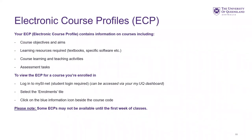So ECPs — what exactly are they? Your electronic course profile contains all the information for your course: the course objectives and aims, learning resources you need such as textbooks and specific software, learning and teaching activities, and your assessment tasks. To view your ECP for courses you've enrolled in, log into MySignet, which can be accessed via the MyUQ dashboard, select the enrolments tile, and click on the blue information icon beside the course code. Note that some ECPs may not be available until the first weeks of class.